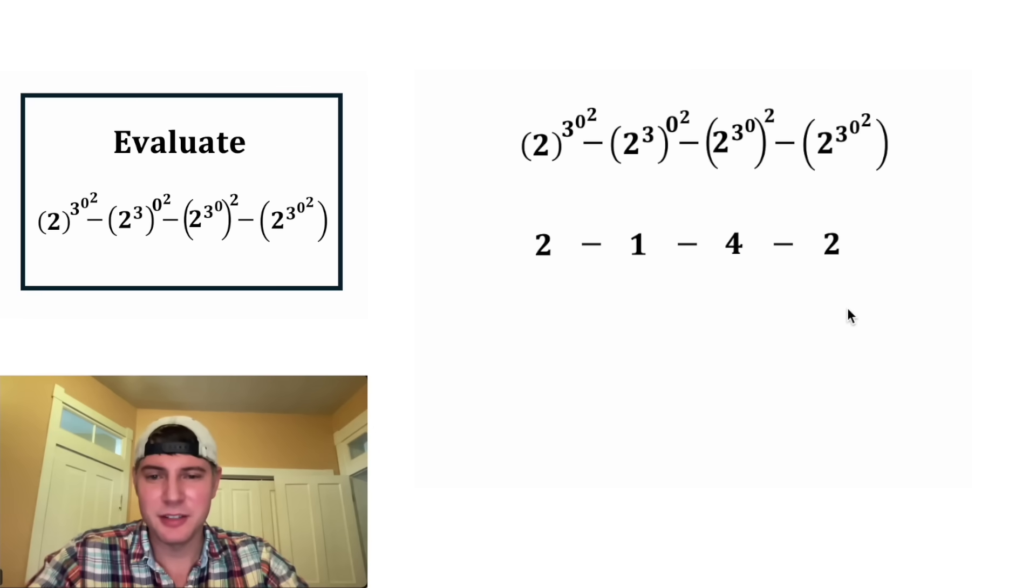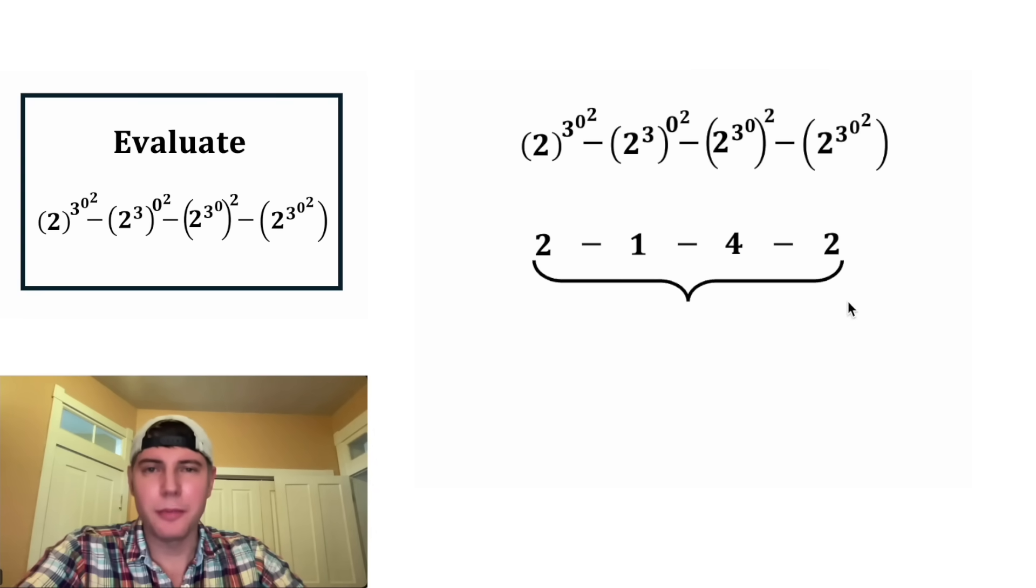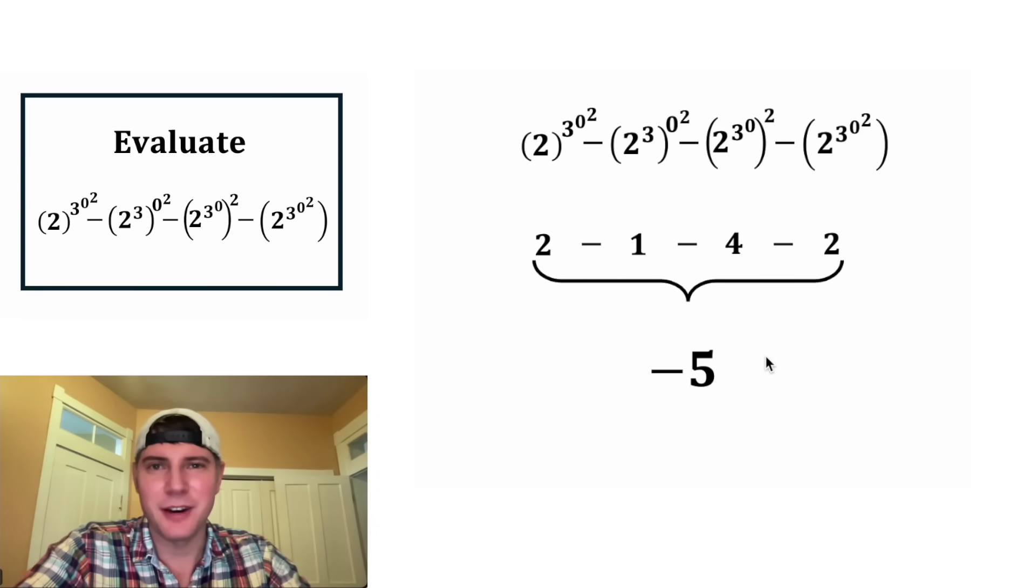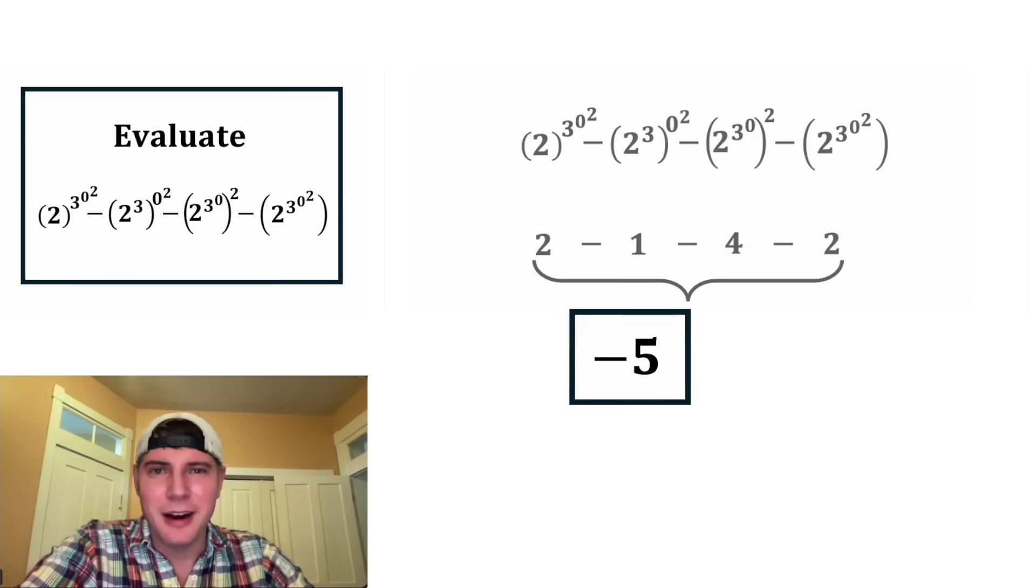Now we just simplify this. Two minus one minus four minus two is equal to negative five. This is the answer to our question. Let's put a box around it. How exciting.